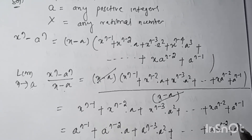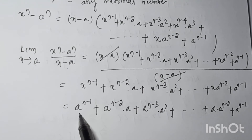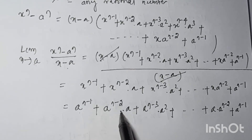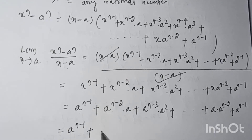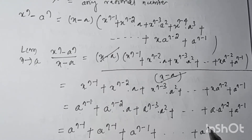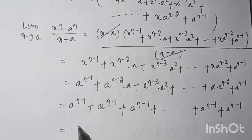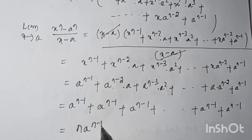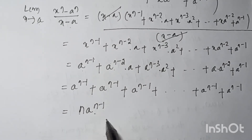After canceling (x - a) and substituting x = a, each term becomes a^(n-1). We get: a^(n-1) + a^(n-1) + a^(n-1) + ... continuing up to a^(n-1). So, how many times does a^(n-1) appear? There are exactly n such terms, so we can write n·a^(n-1).